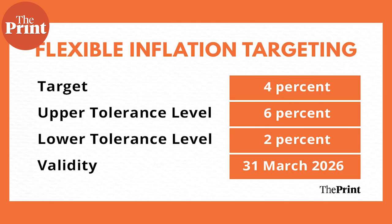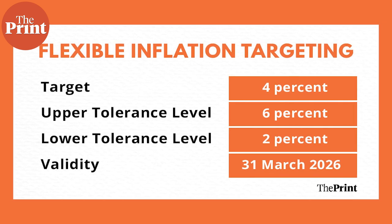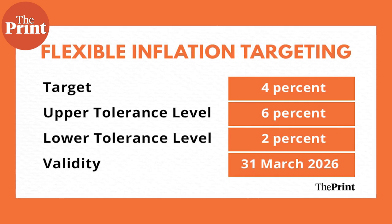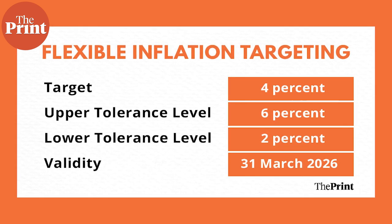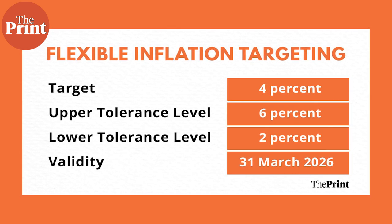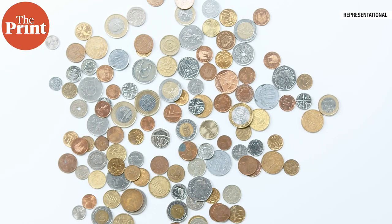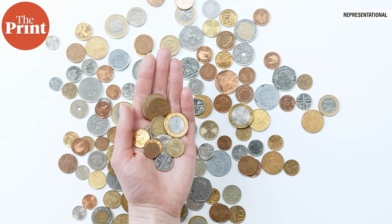Under this framework, called Flexible Inflation Targeting, the RBI has to maintain retail inflation at four percent for five years, with a tolerance band of two percent on the upside or downside. The framework was introduced in 2016 through an official government notification and was valid till March 31st, 2021. Last year, the same inflation target was extended by another five years to March 31st, 2026.